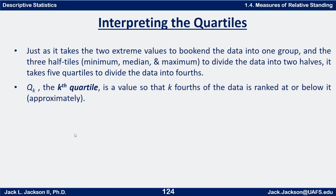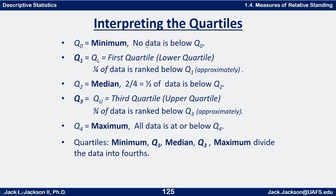Q zero is just the minimum — zero fourths is below the minimum. Q four is the maximum; all four fourths of the data is at or below Q four. Q two is the median — two fourths, or one half, of the data is below Q two. So we have the minimum, median, and maximum, and then we're going to split those in two.